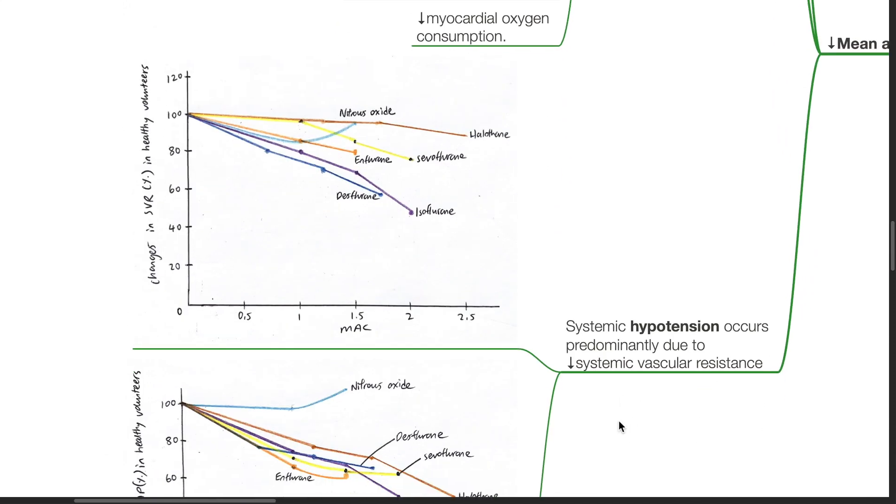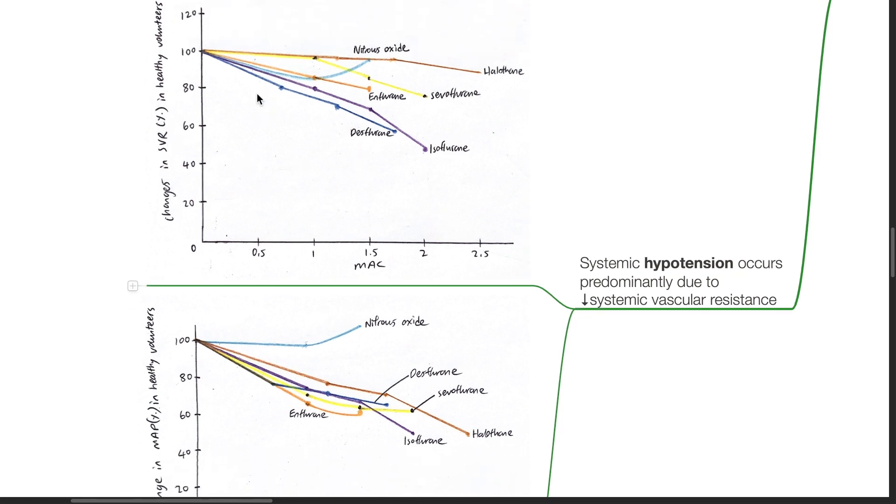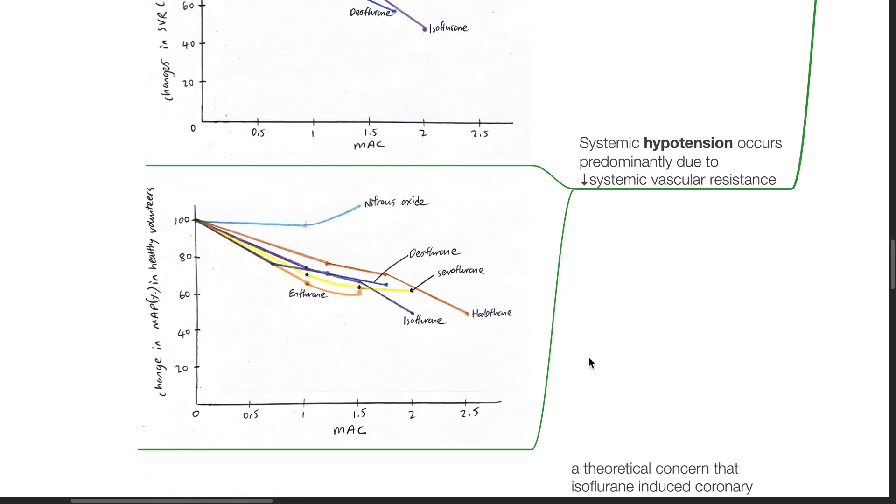Systemic hypotension occurs predominantly due to decrease in systemic vascular resistance. This graph shows changes in systemic vascular resistance in healthy volunteers for nitrous oxide, halothane, sevoflurane, enflurane, desflurane and isoflurane. And this graph shows changes in mean arterial pressure in healthy volunteers for inhalational anesthetic agents.